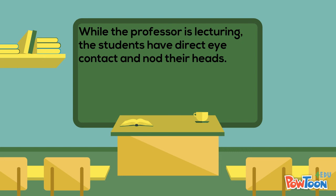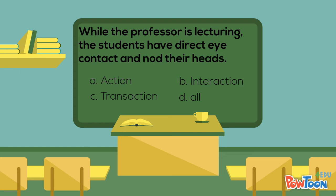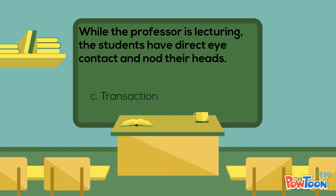Again, while the professor is lecturing, the students have direct eye contact and nod their heads. What communication model is this an example of? a) communication as action, b) communication as interaction, c) communication as transaction, or d) all of the above? The correct answer is c) communication as transaction. The students are communicating nonverbally while the professor is communicating verbally. This simultaneous communication only occurs in the communication as transaction model.